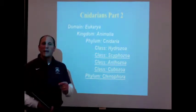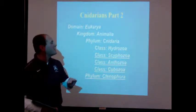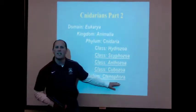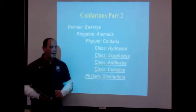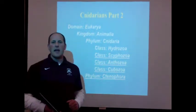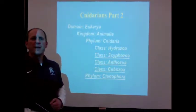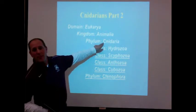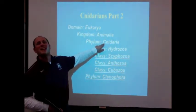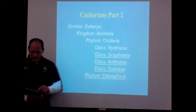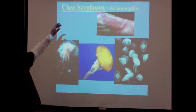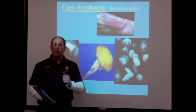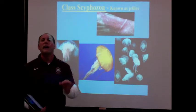We are also going to look at another group of organisms very similar to the Cnidarians: the phylum Ctenophora, C-T-E-N-O-P-H-O-R-A. They have some distinctive differences that allow them to be grouped in a different phylum. The first topic is the class Scyphozoa — these are known as the jellies. They used to be called jellyfish, but these are not fish.